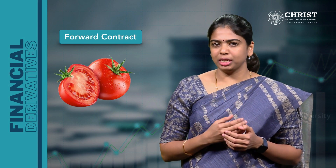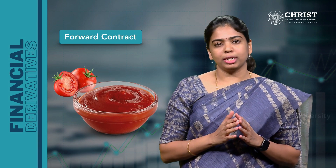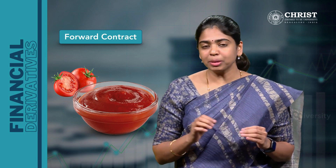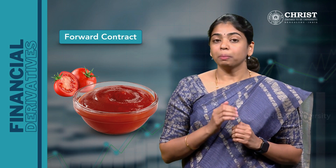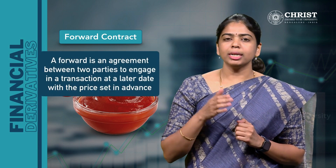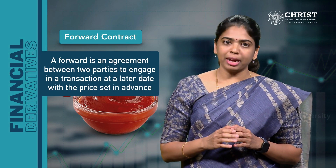Let's begin with a forward contract. We all know that tomato prices are highly volatile in the market — sometimes selling at ₹10 or ₹20 and sometimes even at ₹120 per kg. But if you had noticed, the price of tomato ketchups in the market is not as volatile as that of tomatoes. So how do you think the company managed to retain a stable selling price for ketchups despite the price of tomatoes being highly volatile? Probably the company would have entered into a forward agreement with a trader. A forward is an agreement between two parties to engage in a transaction at a later date with a price set in advance.